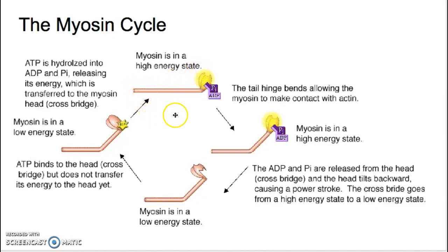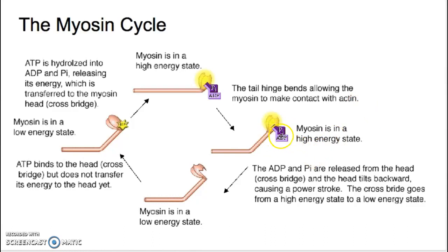The high energy myosin is going to make contact with actin — reach up and grab onto that actin. Once it's done that, the ADP and the phosphate are going to be released, and myosin is going to go back to its low energy state.